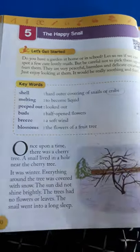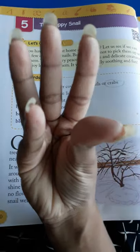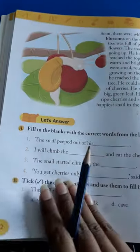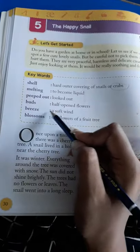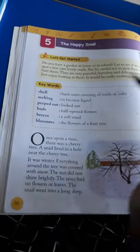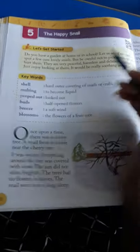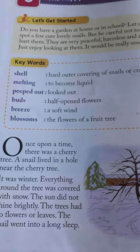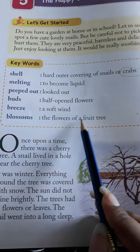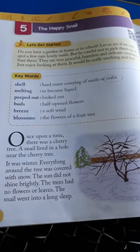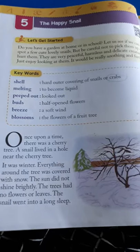Next keyword: 'buds' — a half-open flower. The flower that has not fully opened yet. In Hindi we also call it 'kali'. Next is 'breeze' — a soft wind. That very gentle, light wind that blows — we call it breeze. For example, in the rainy season there is a lovely cool soft wind. That is simply called a breeze. And 'blossom' means the flower of a fruit tree — when a fruit tree blooms and the flower opens.